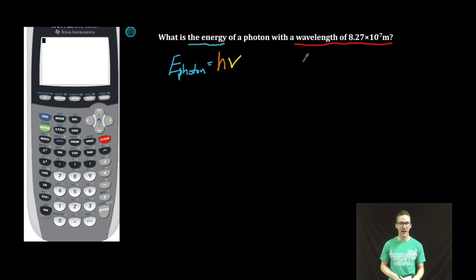However, we also have speed of light is equal to wavelength times frequency. So I'm gonna bust out some algebra skills here and solve this equation for frequency. I'm gonna divide each side by wavelength, so frequency is equal to speed of light over wavelength.